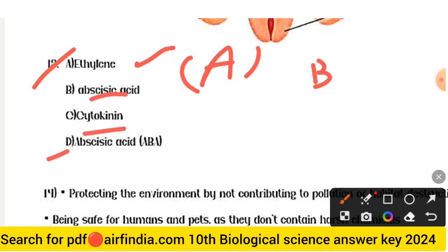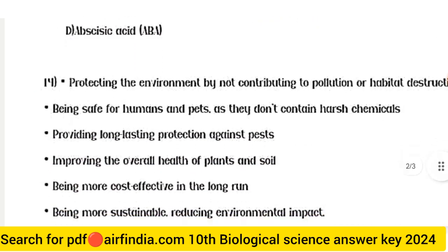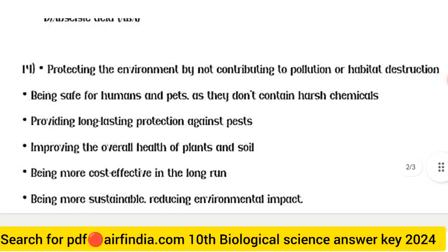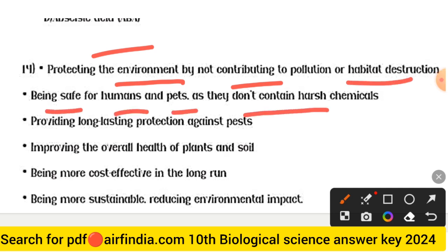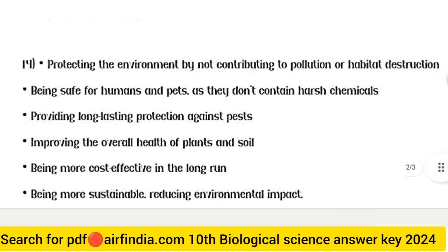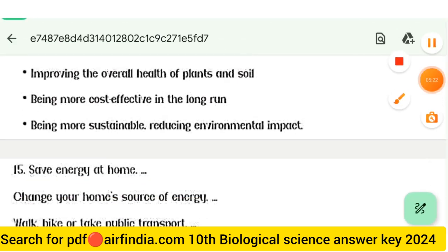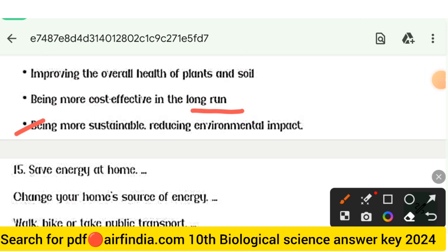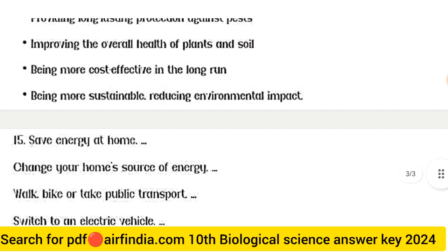Question 13 answer: A is ethylene, B is abscisic acid (ABA), and cytokinins. Question 14 answer: Protecting the environment by not contributing to pollution or habitat destruction; being safe for humans and pets as they don't contain harsh chemicals; providing long-lasting protection; improving overall plant and soil health; being more cost effective and sustainable in the long run.